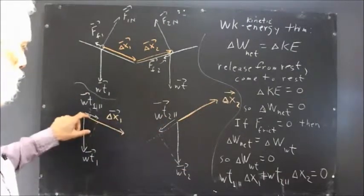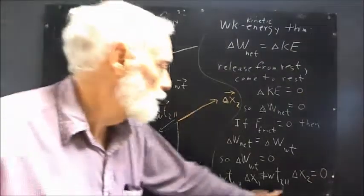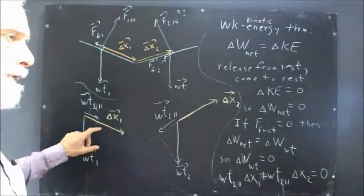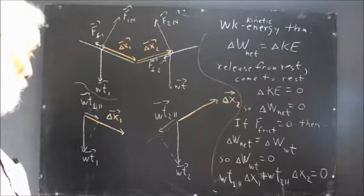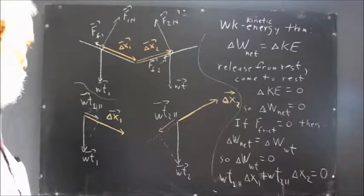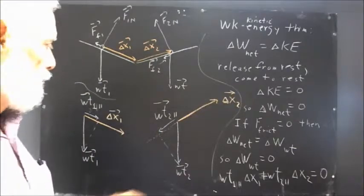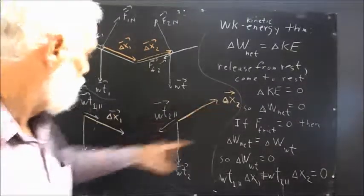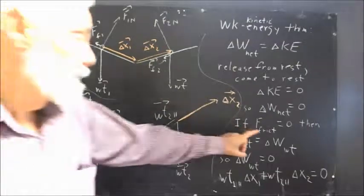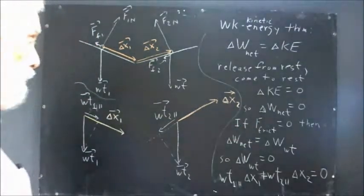So, if this vector is smaller than this vector, to make this true, then this vector has to be longer than this vector. Meaning that if we have a shallower angle over here, then this displacement is going to have to be bigger than this displacement, under the assumption that the friction force is zero.